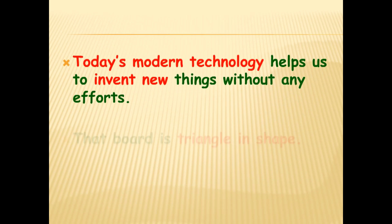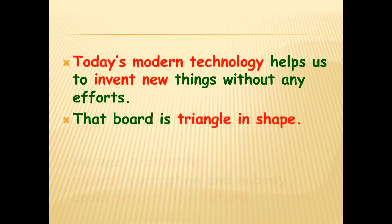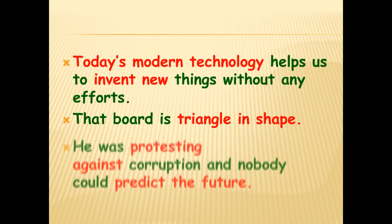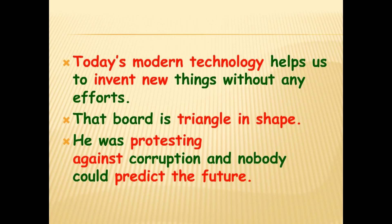'Today's modern technology' — this should be written as either 'today's technology' or 'modern technology,' since 'today' and 'modern' give the same meaning. 'Invent new' — the word 'invent' itself means something new, so 'new' could be avoided. 'That board is triangle in shape' — 'triangle' itself denotes shape, so the word 'shape' is unnecessary. 'Protesting against corruption' — 'protest' itself means something against, so 'against' is redundant. 'Predict the future' — 'predict' already refers to the future, so 'future' is unnecessary.